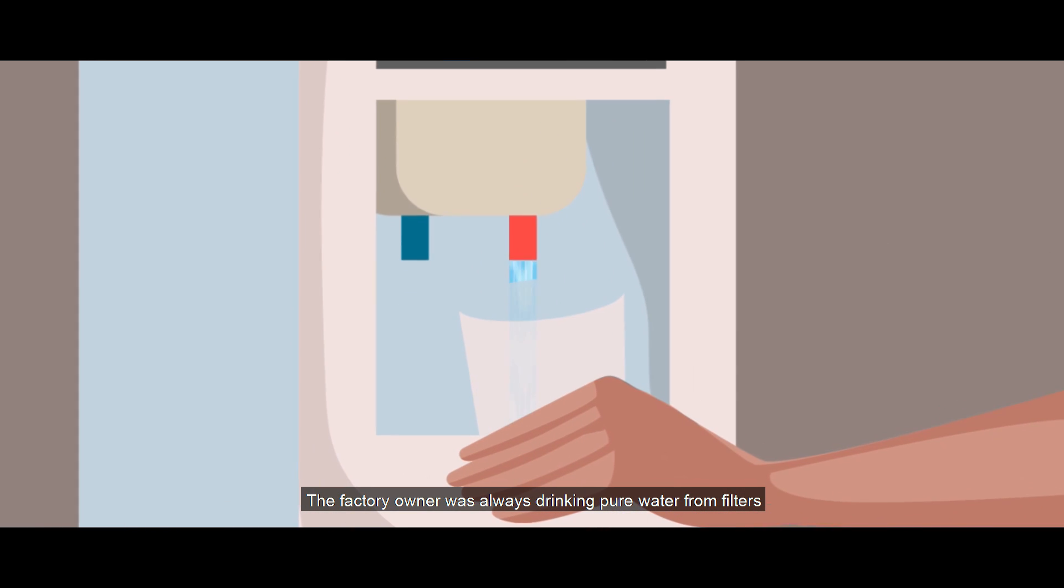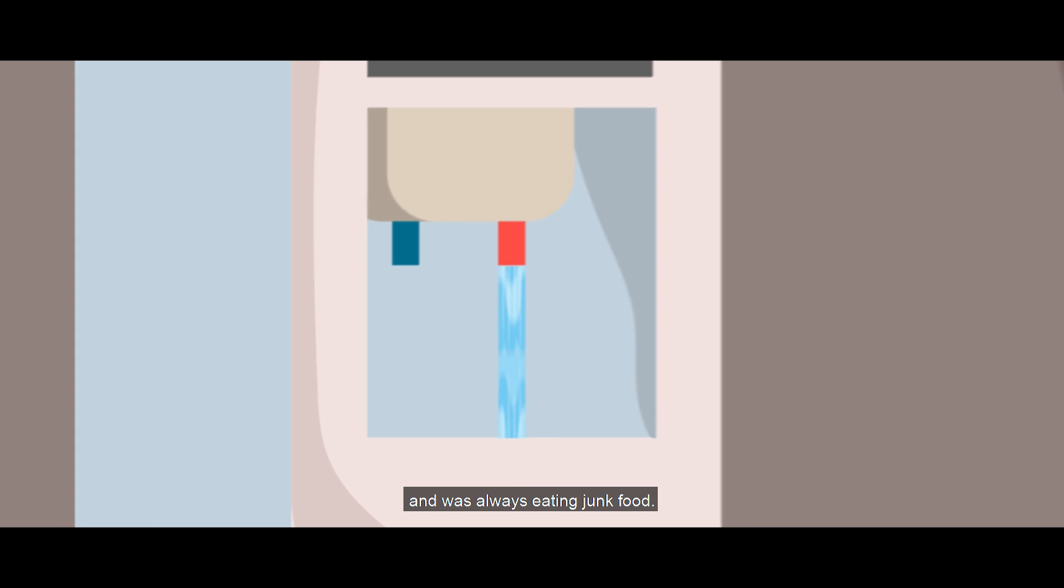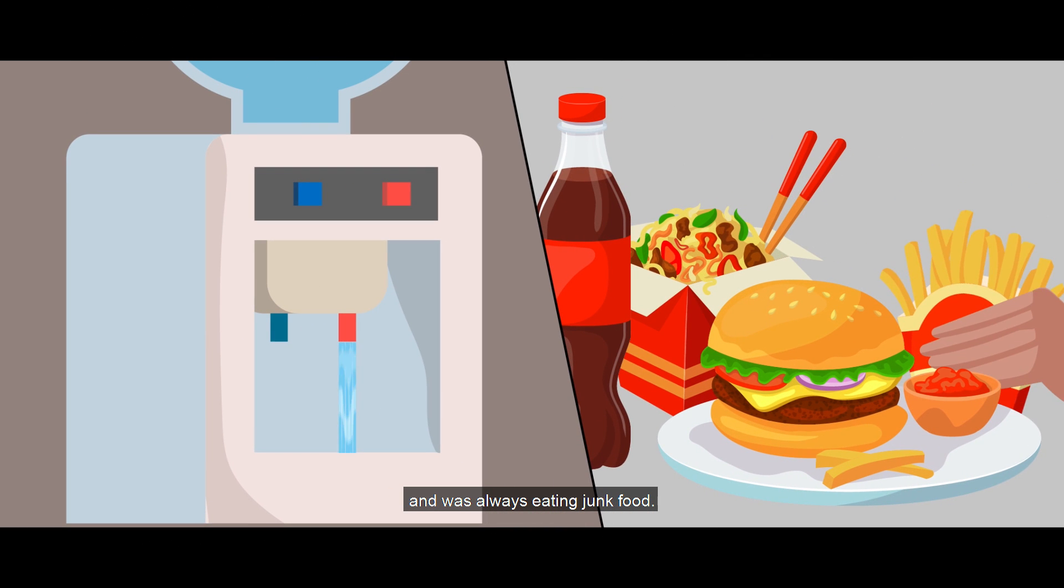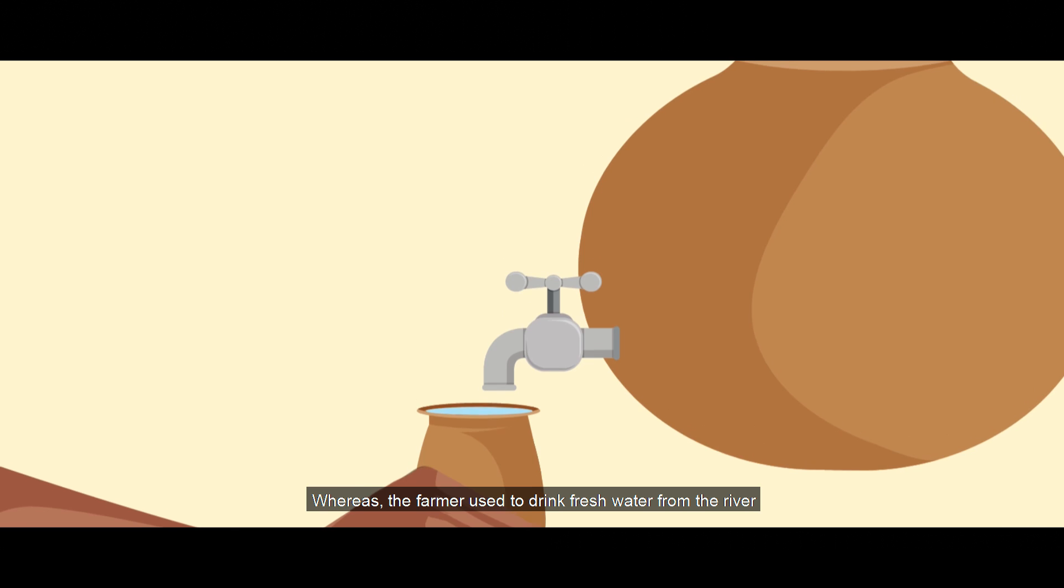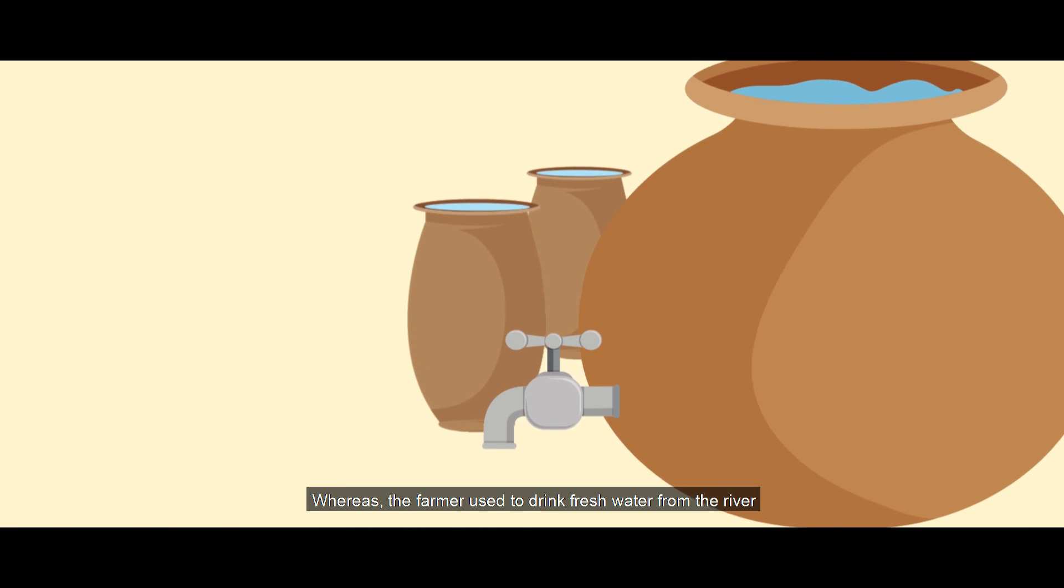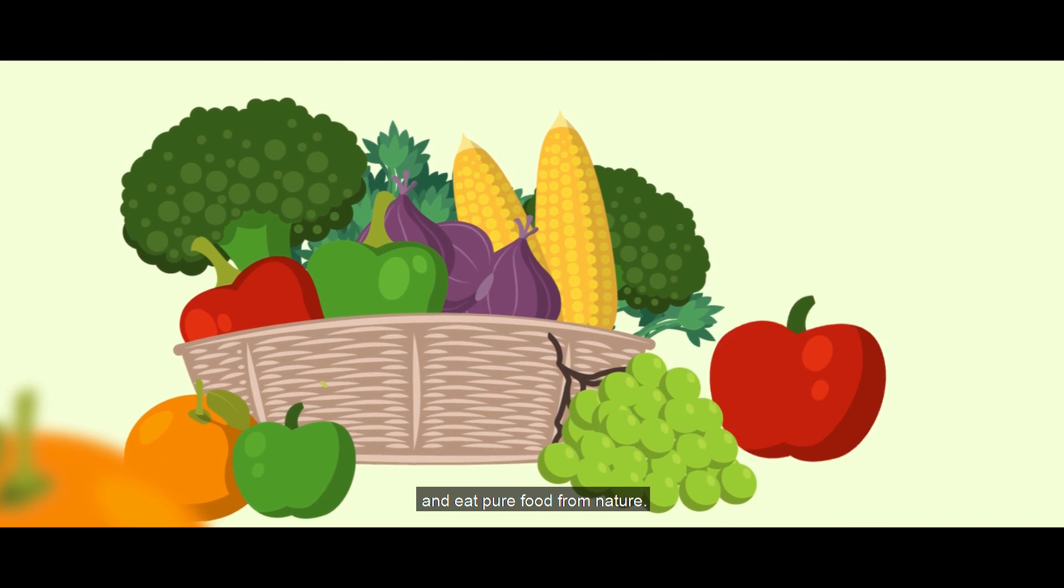The factory owner was always drinking pure water from filters and was always eating junk food. Whereas, the farmer used to drink fresh water from the river and eat pure food from nature.